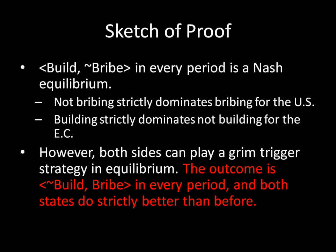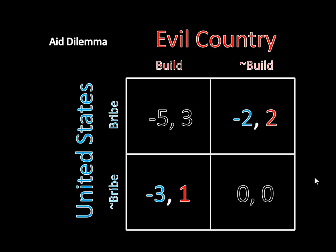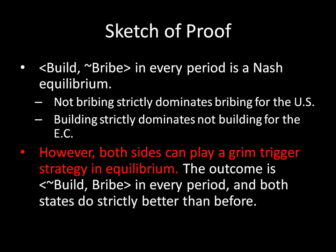Moving on to the other half: I want to show that the outcome not-build/bribe in every period is better than build/not-bribe in every period. We just compare these two outcomes. The build/not-bribe outcome occurs when both players play strictly dominant strategies every period. The not-build/bribe outcome occurs when both countries play the grim trigger strategy. Negative two is greater than negative three for the United States, and two is greater than one for the evil country. So both countries prefer the grim trigger outcome every period over the dominant strategy outcome.